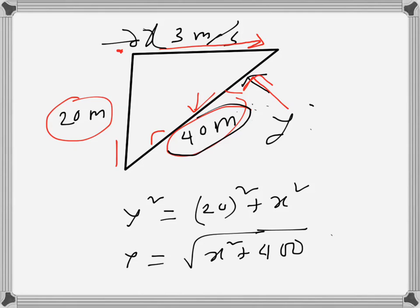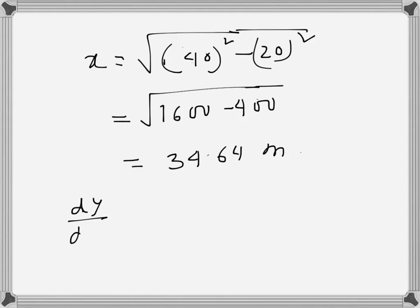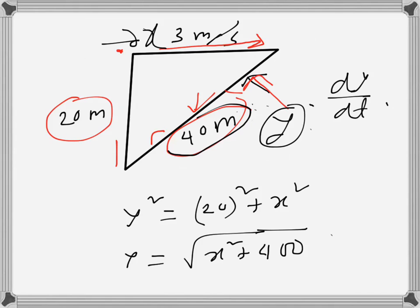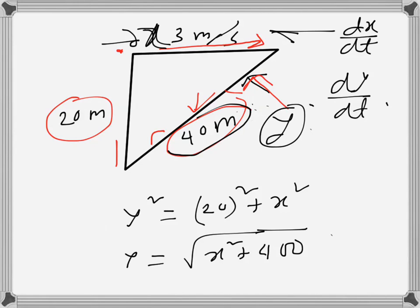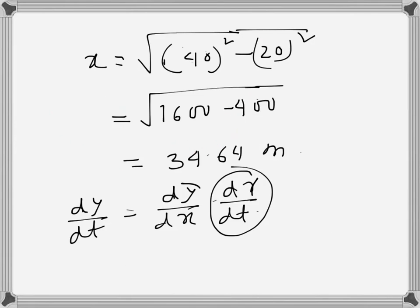We have to find at what rate the string is being let out, which is dy/dt. Now dy/dt can be written as dy/dx times dx/dt because we have dx/dt given. This is possible because we have expressed y in terms of x, so y is a function of x and dy/dx is possible to find.